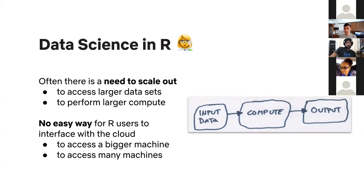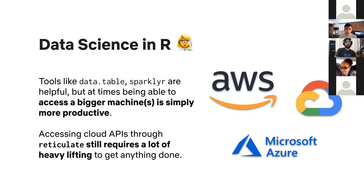Unfortunately the R community today doesn't have many good resources to interface effectively with the cloud. If there were an easy way to just take your compute and put it onto a much bigger instance on Amazon's or Google's cloud, it would be much more productive. In the Python universe there are many tools available, but in the R universe it's still making progress. You can use data.table or dplyr for more efficient processing, or translate code to sparklyr, but all of that requires changes in your code.